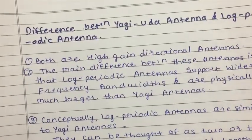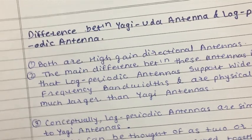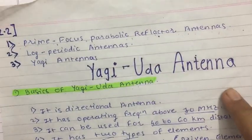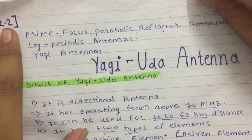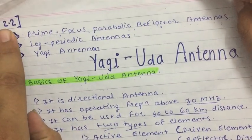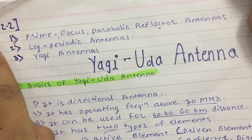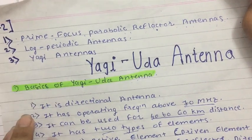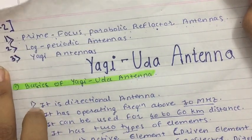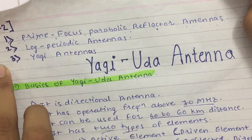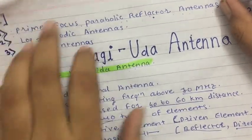In this video, we covered three types of antennas: Yagi-Uda antenna, log periodic antenna, and prime focus parabolic reflector antenna — including their basic structure, radiation patterns, working principles, advantages, disadvantages, and applications. I hope you understood all of this. Thank you so much.